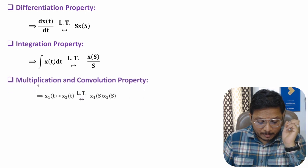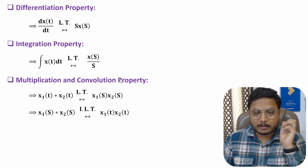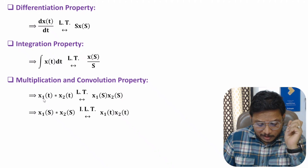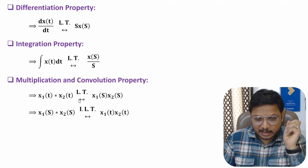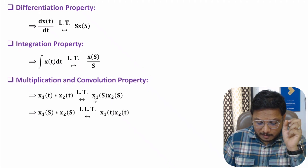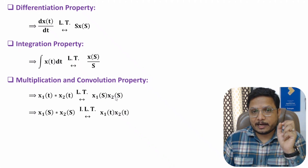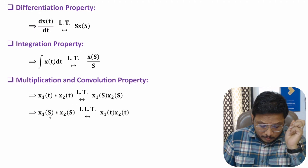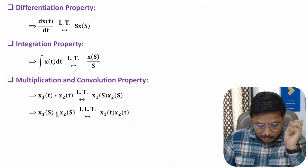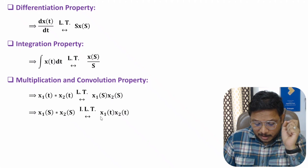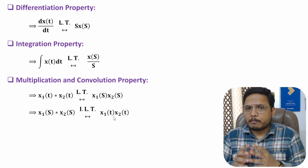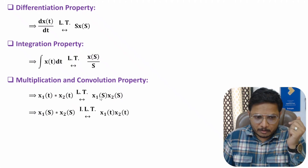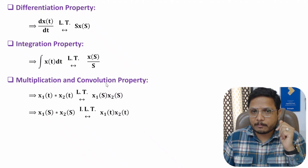Now let me discuss the last property, which is based on multiplication and convolution. If you have the convolution of x1(t) and x2(t), then after the Laplace transform the result is multiplication in the s-domain. Conversely, if you have convolution of Laplace domain signals, then after inverse Laplace transform there will be multiplication in the time domain. I have already discussed this property in my earlier videos.